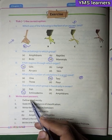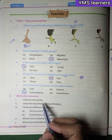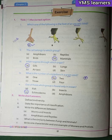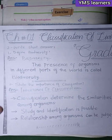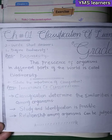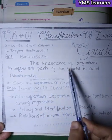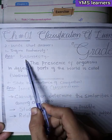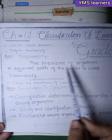Now Question 2: Write short answers. Define biodiversity. The answer: The presence of organisms in different parts of the world is called biodiversity. 'Bio' means life and 'diversity' means distribution or variation.